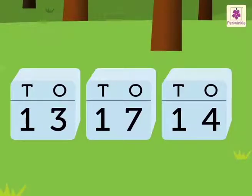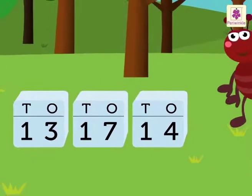The numbers are 13, 17 and 14. Let's arrange 13, 17, 14 in ascending order with the help of Taub, the ant.